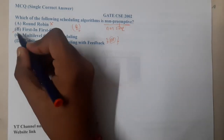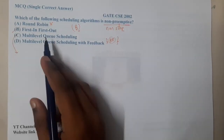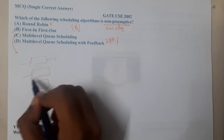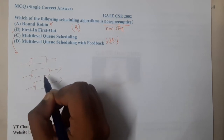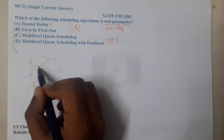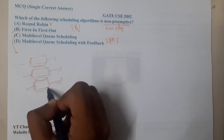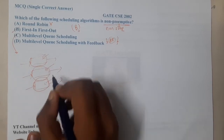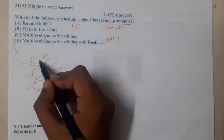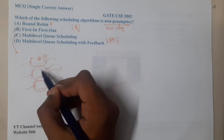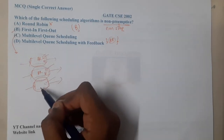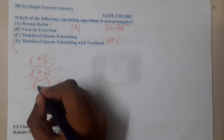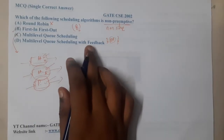For students who have forgotten: a multi-level queue scheduler has multiple levels, and each level might have different requirements — some for system processes, some for user processes, some for system calls. Each level can run on a different algorithm. For example, one level could run Round Robin with time quantum 4, another with time quantum 8, and another on Shortest Job First or priority-based scheduling.